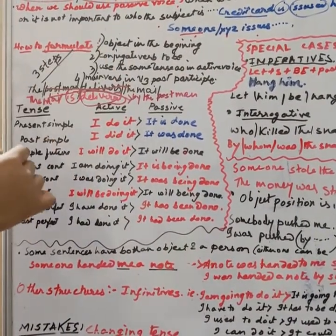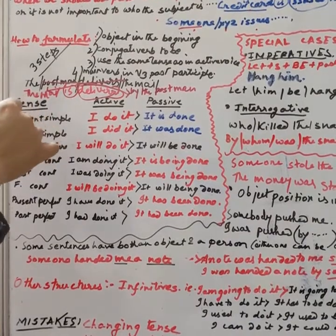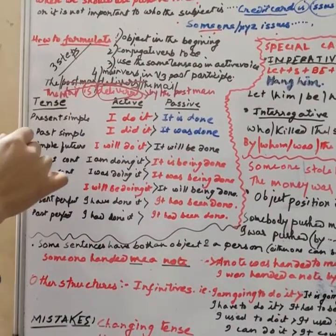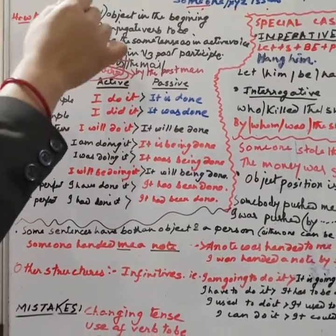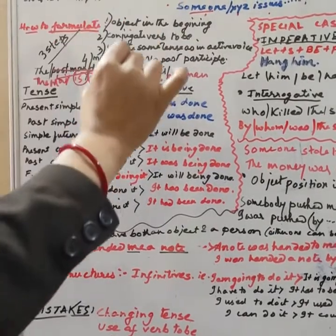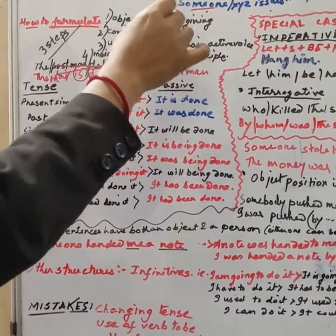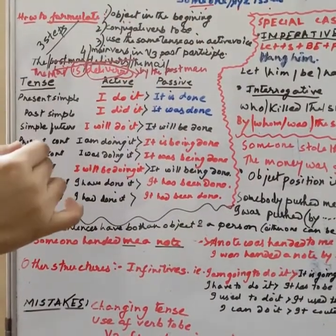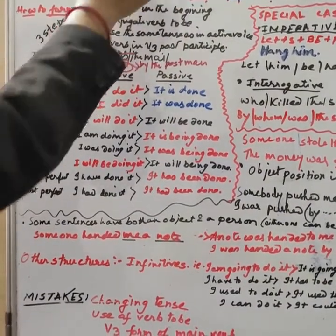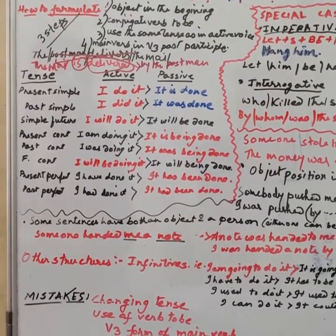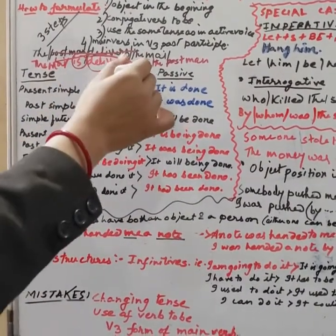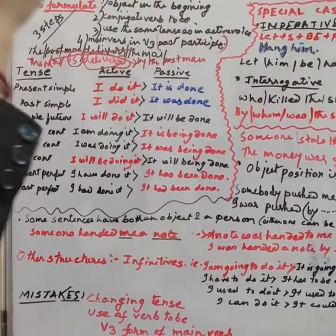Now the final steps for how to formulate passive voice. Keep in mind these three or four main steps: the object comes at the beginning; conjugate verb to be; use the same tense; and the main verb in V3 or past participle form.